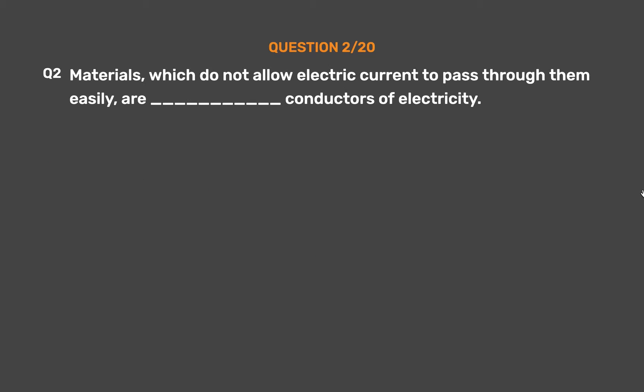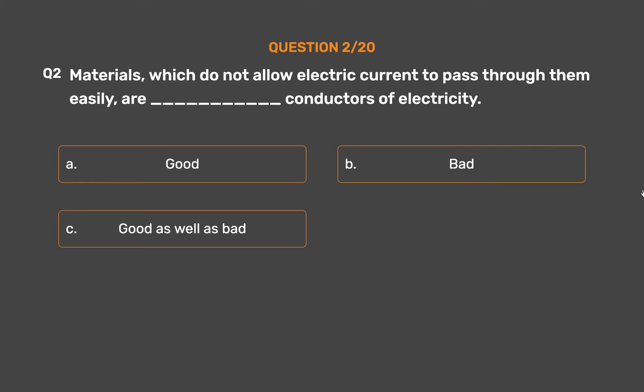Question No. 2: Materials which do not allow electric current to pass through them easily are underscore conductors of electricity. Option A: Good. Option B: Bad.